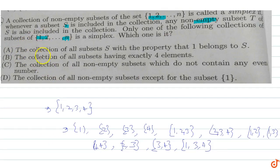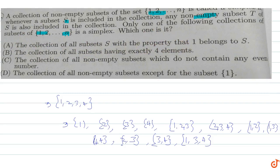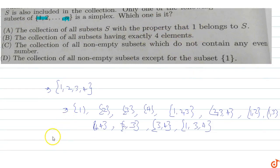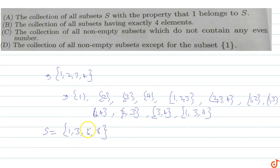For Option A — the collection of all subsets S where 1 belongs to S — it is not compulsory that 1 belongs to S. For example, suppose the set is {1, 3, 6, 8}. All its subsets like {1,3}, {3,6}, {6,8}, {1,3,6}, {3,6,8} are included in this collection.